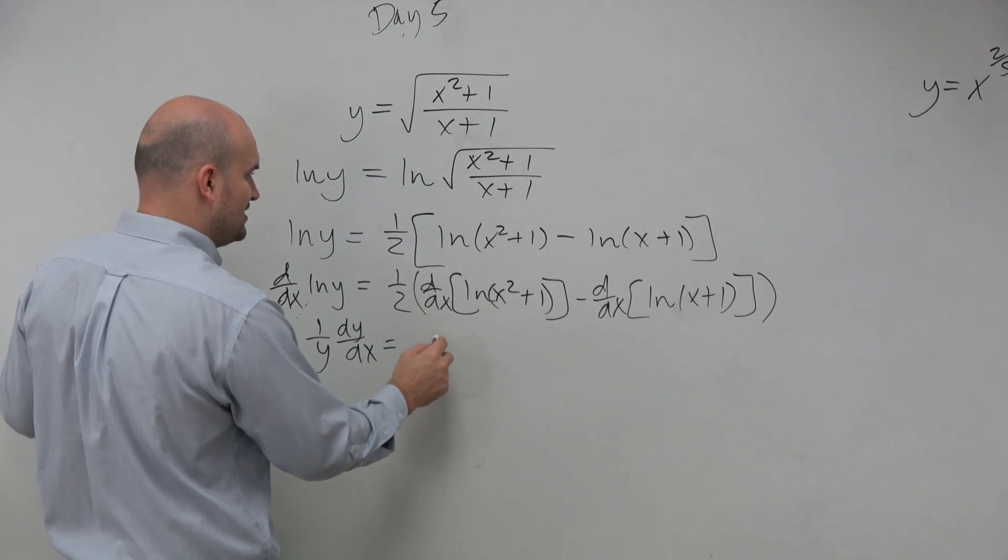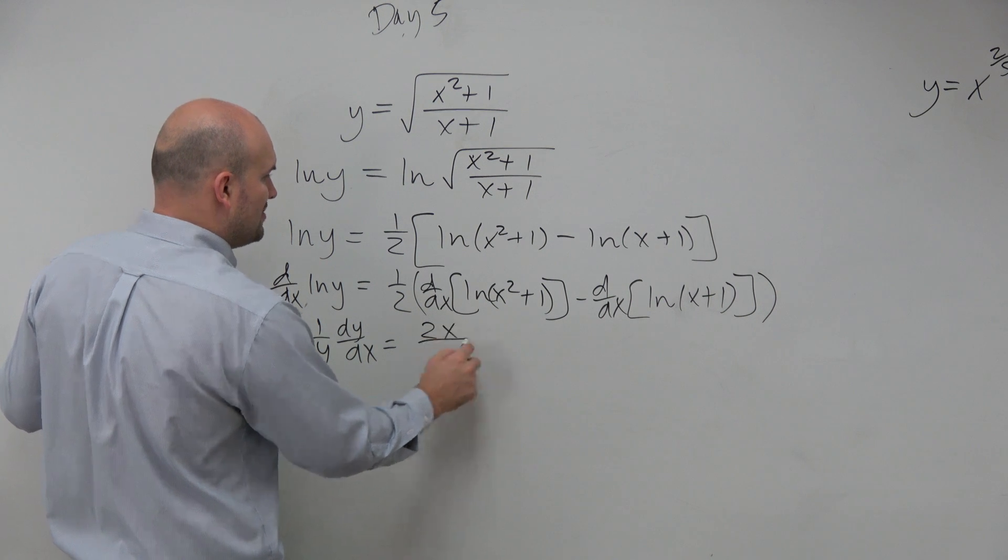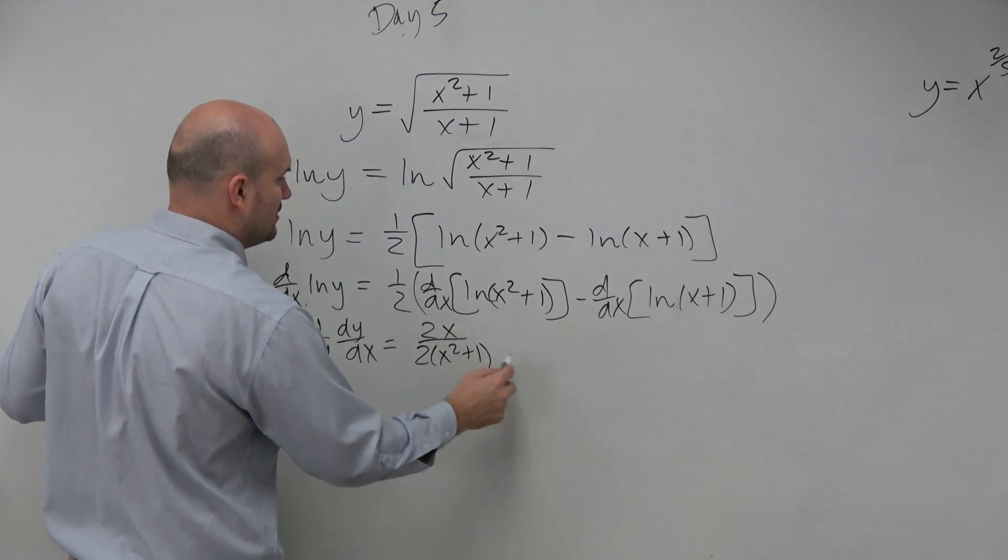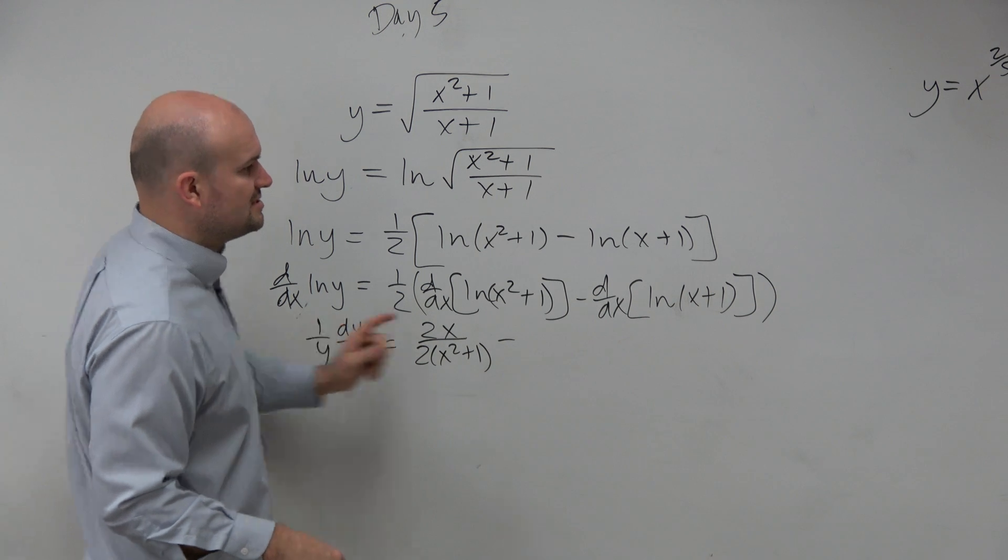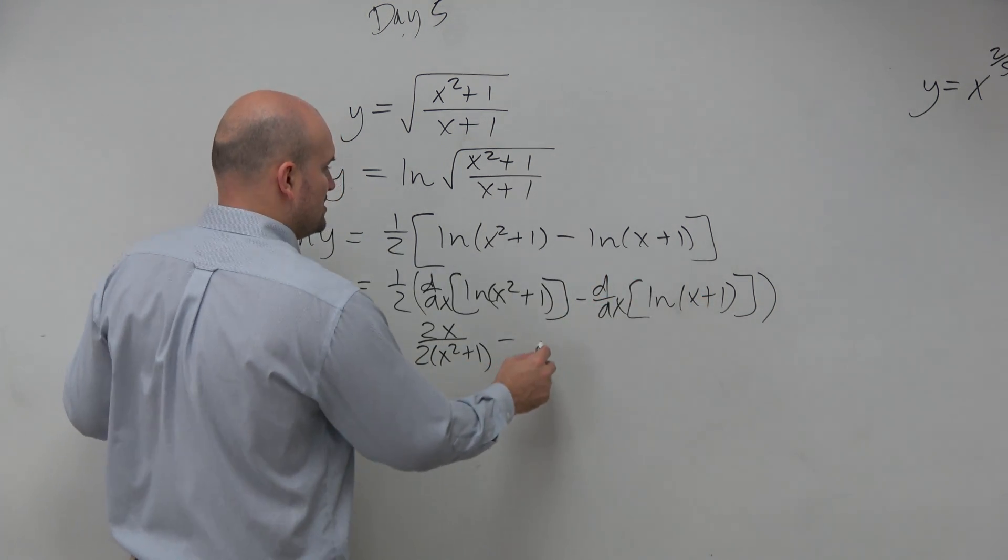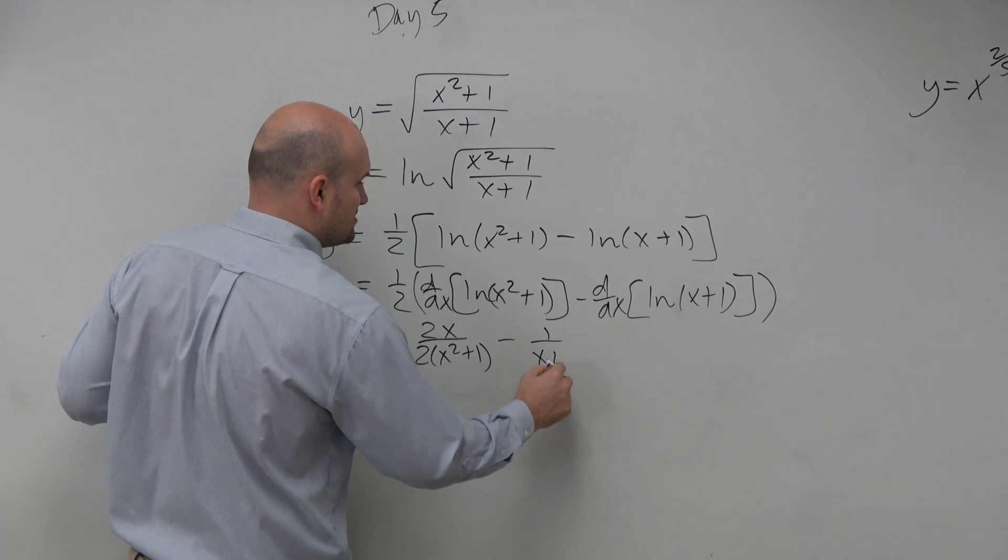So I can basically just say, oh OK, this is actually not that bad. This is going to be 2x over 2 times x squared plus 1. Again, for speed purposes, notice that here the derivative is 1. So that's going to be minus 1 over x plus 1.